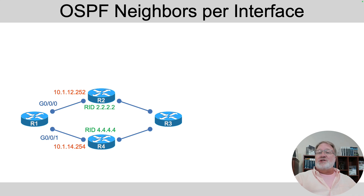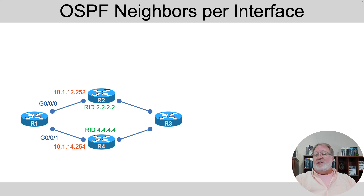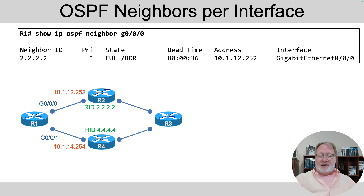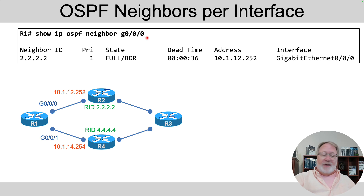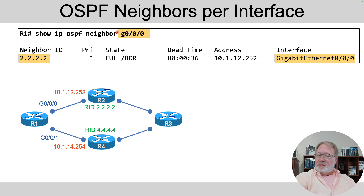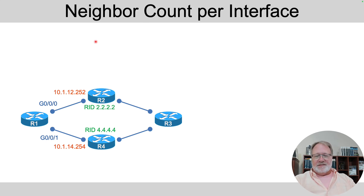A lot of OSPF troubleshooting starts with neighbors, so the show IP OSPF neighbor command is probably the very first place to start. You can use variations like show IP OSPF neighbor with an interface ID to limit output to neighbors off that one interface — for instance, listing GigabitEthernet0/0/0 and not showing the neighbor relationship with R4.